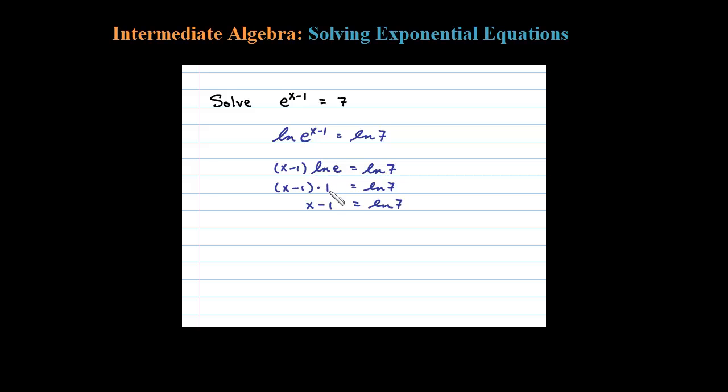Okay, so here to isolate the x, all you have to do is add 1. So x then equals 1 plus the natural log of 7.